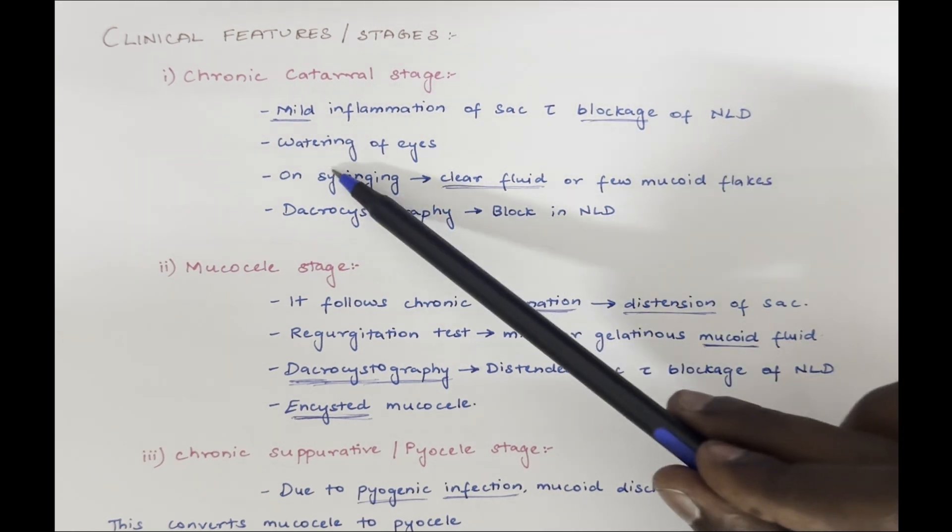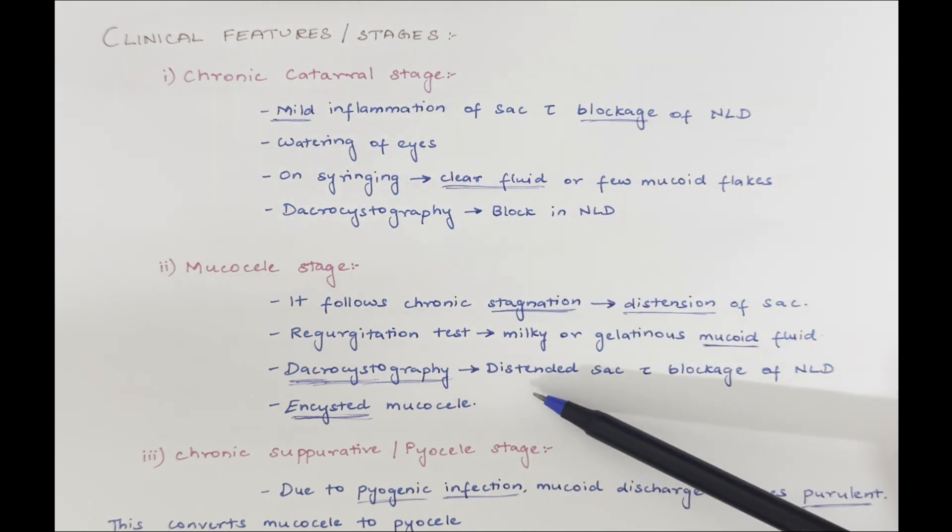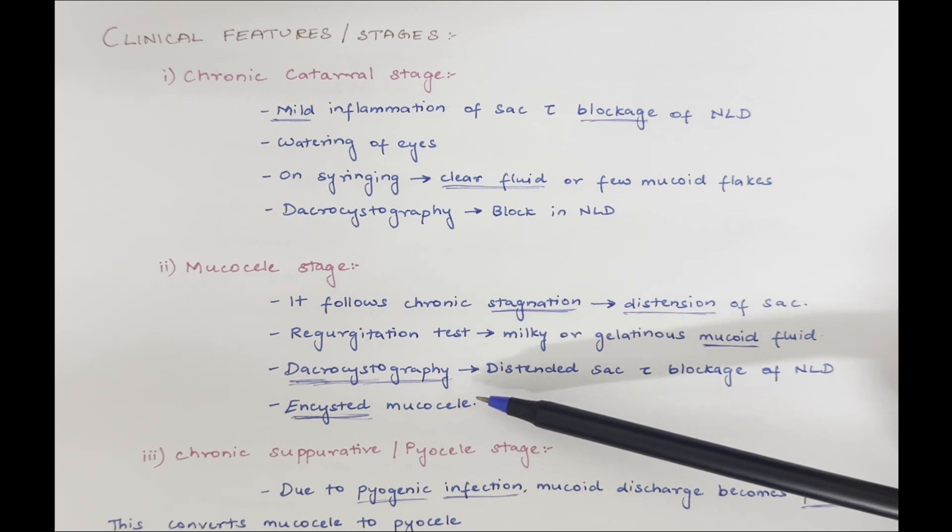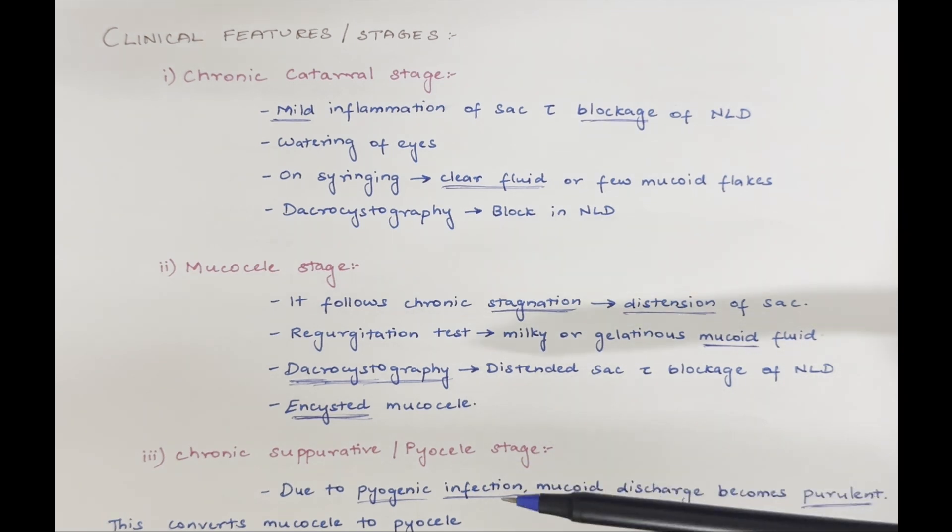In the first stage, we saw mild inflammation. Here, we will start to see distention of the sac. It will lead to formation of encysted mucocele.